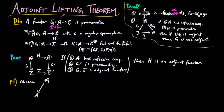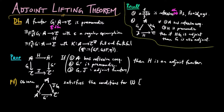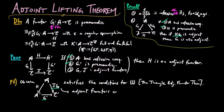To prove this, observe that the following triangle satisfies the conditions for the adjoint triangle theorem. By assumption, the category A has reflexive co-equalizers, G prime is premonadic, and JG is adjoint since adjoint functors are closed under composition.